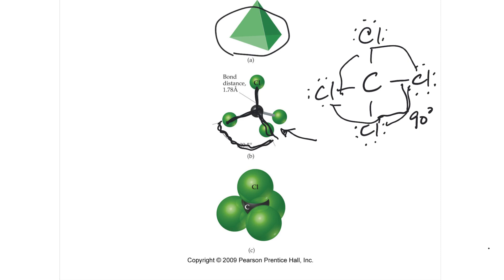This is called a space filling model, which gives you more of an idea of how big each of the atoms are to each other. The bond is rather obscured, but you can see if one atom is smaller than another atom. That's a space filling model.